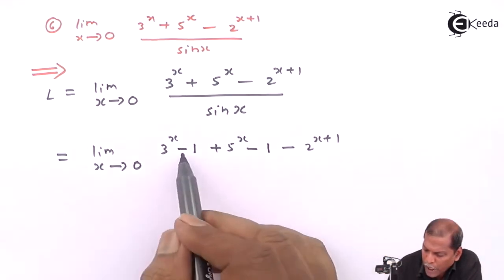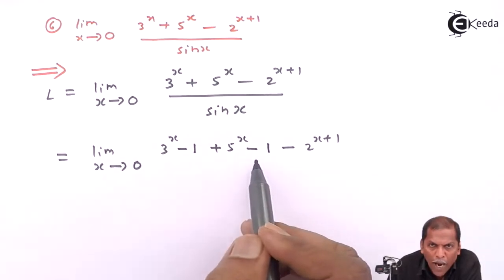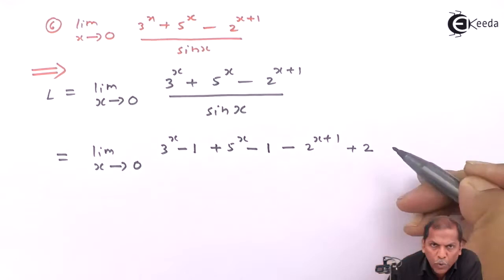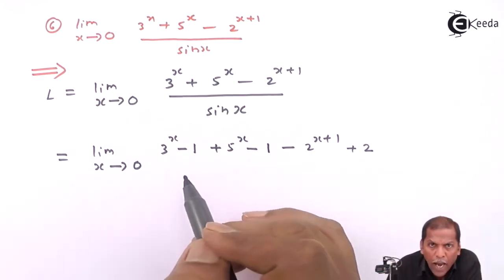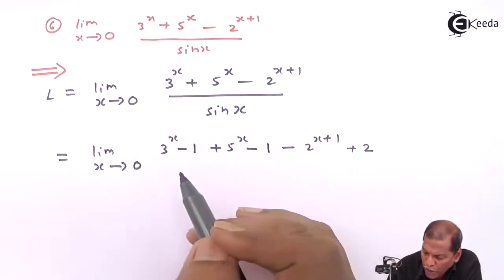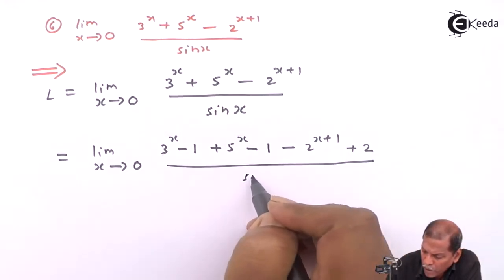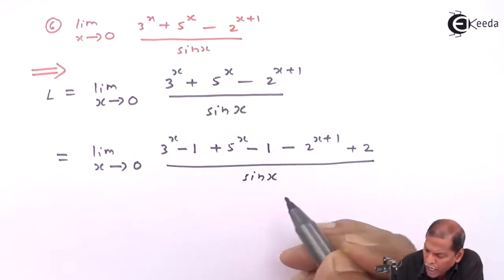Now to balance this minus 1 minus 1 minus 2, we have to add here plus 2. So this is the required adjustment in the numerator and whole thing divided by sin x.